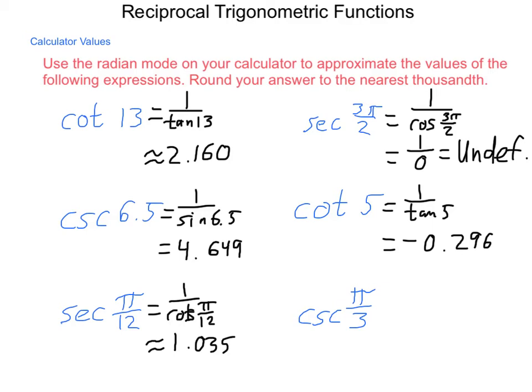Then the cosecant of π thirds will be 1 over the sine of π thirds, which is one that we could do for an exact value, but using the calculator as directed gives us a value of 1.155.